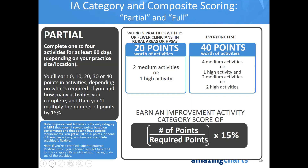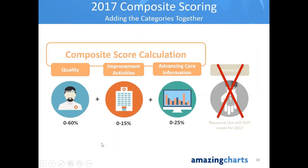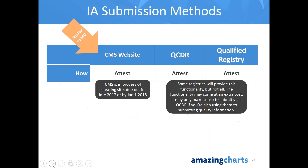To quickly review composite scoring: Quality is 60%, Improvement Activities is 15%, and Advancing Care Information is worth 25%. From the examples we reviewed today, you can see how easy it is to earn your 15 points in this particular category. CMS is developing a website — very similar to what you do now for Meaningful Use — which will enable you to attest for the improvement activities.